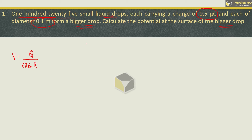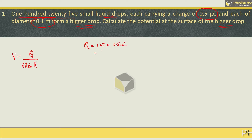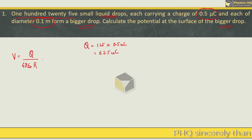The charge on the bigger drop will be equal to the sum of all the charges on the small liquid drops. There were 125 liquid drops, and the charge on each one is 0.5 micro coulomb. When you calculate this, it will be 62.5 micro coulomb.